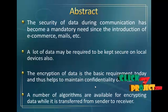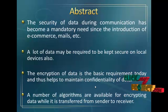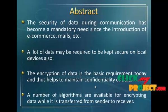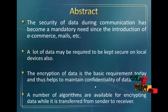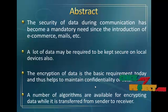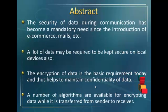The encryption of data is a basic requirement today, helping to maintain the confidentiality of data. A number of algorithms are available for encryption as data is transferred from sender to receiver. In this method, the text is converted from binary to decimal, decimal to binary, decimal to octal, and octal through a NOT operation, ultimately producing one type of cipher text. This cipher text is then connected to the ASCII code 256 process.